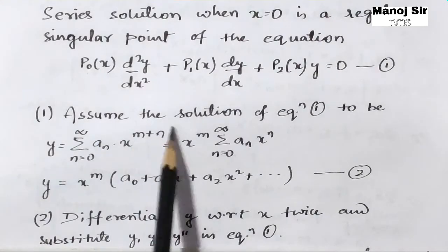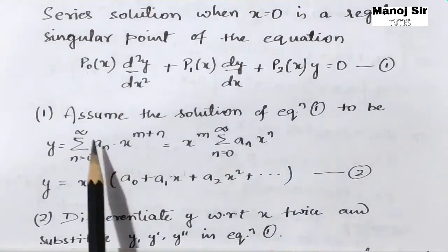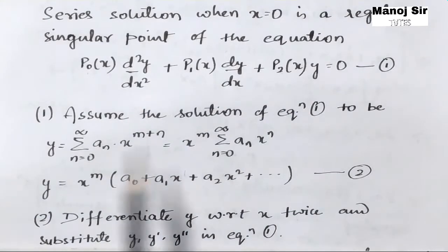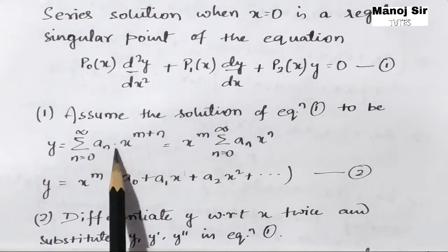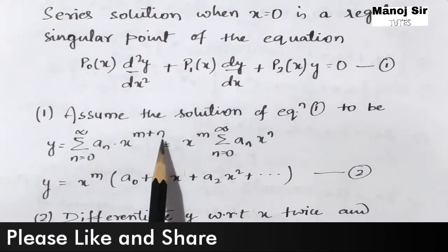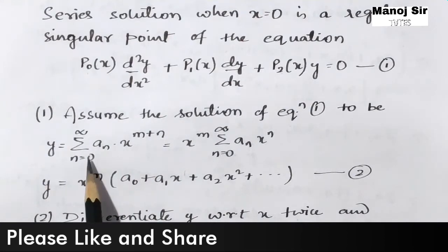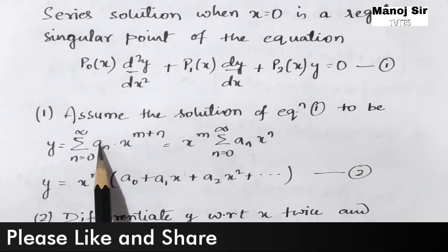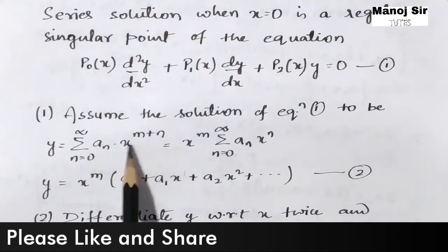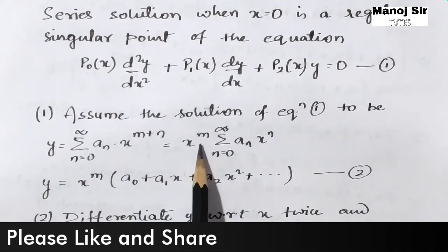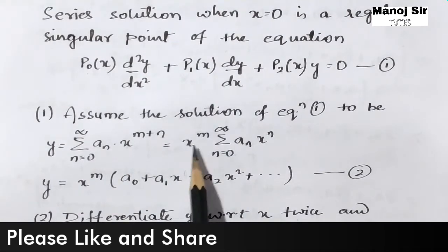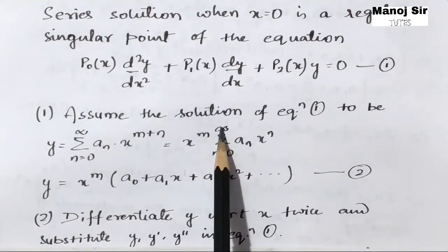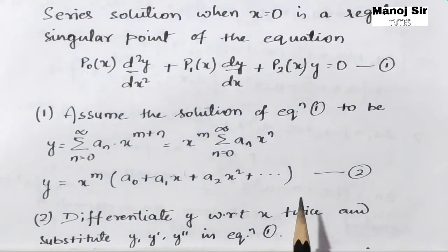First step: assume the solution of equation number 1 to be y equals summation n equal to 0 to infinity of aₙ into x to the power n plus m. Here we have summation n equal to 0 to infinity, and we can take x to the power m common, taking it outside of the summation. Then we can rewrite this as x to the power m times summation n equal to 0 to infinity of aₙ into x to the power n.